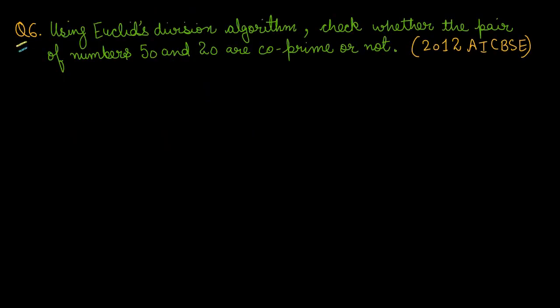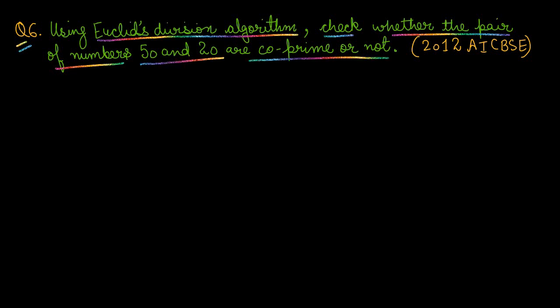Question number six: Using Euclid's division algorithm, check whether the pair of numbers 50 and 20 are co-prime or not. Co-prime means their HCF should be 1. We need to check, using Euclid's division algorithm, whether HCF(50, 20) equals 1 or something else.